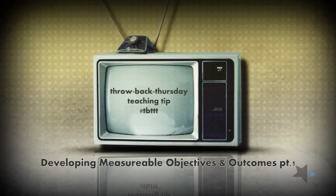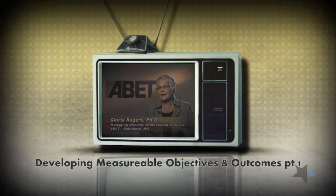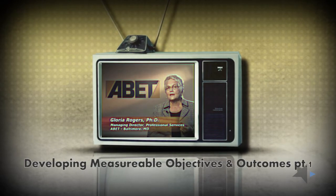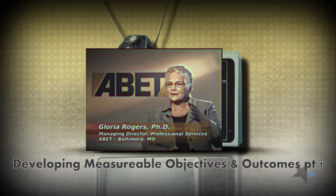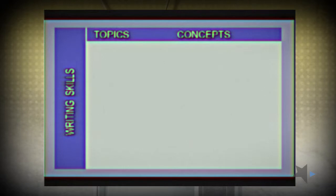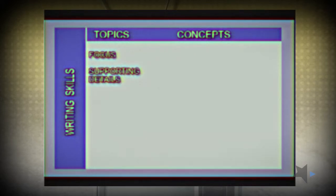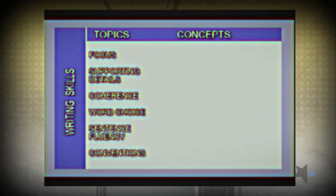When you think about developing measurable outcomes or objectives, it's important to remember that it is a building block. For example, writing skills would be another example. You might have six or seven topics such as focus, supporting details, coherence, word choice, sentence fluency, and conventions, and then you have the concepts that you're going to focus on related to those topics.